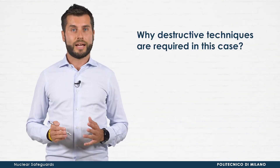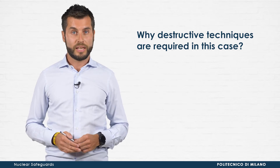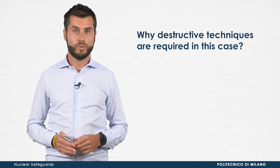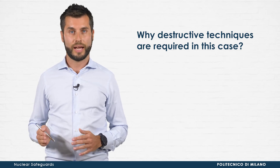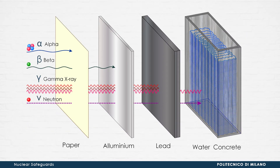Their accurate quantification involves a destructive measure, since it requires the collection of samples and lengthy and laborious radiochemical separation procedures. The first answer to why destructive techniques are required is given by radiation-matter interaction. While gamma rays of proper energy emitted from easy-to-measure radionuclides can easily come out from the matrix to be measured, soft X-rays, alpha and beta particles don't. Being low-energy photons or charged particles, they strongly interact with matter, so they are stopped by the matrix.